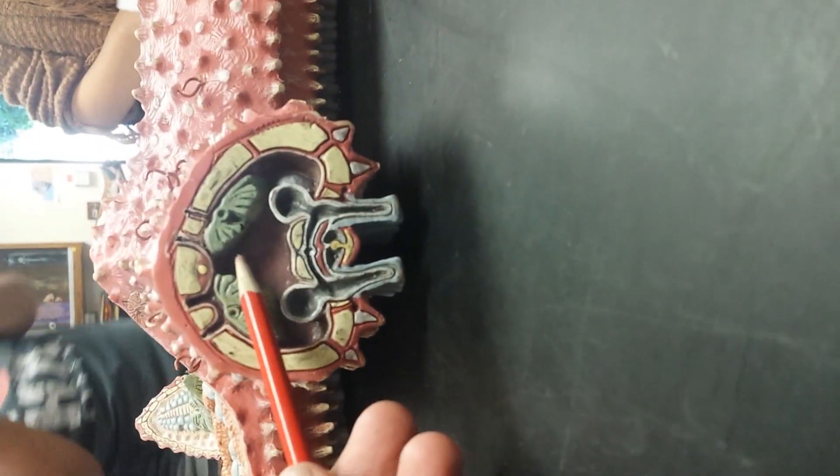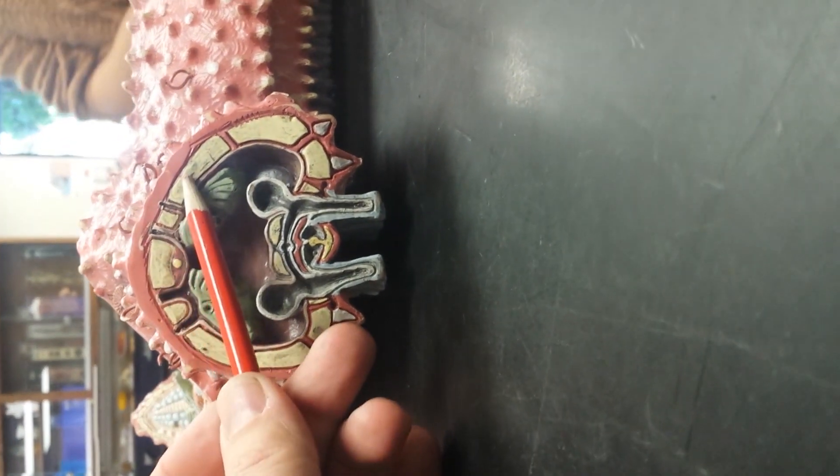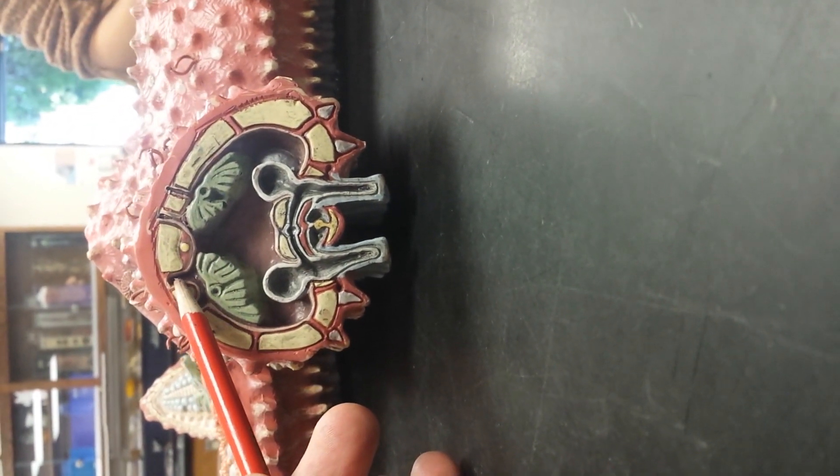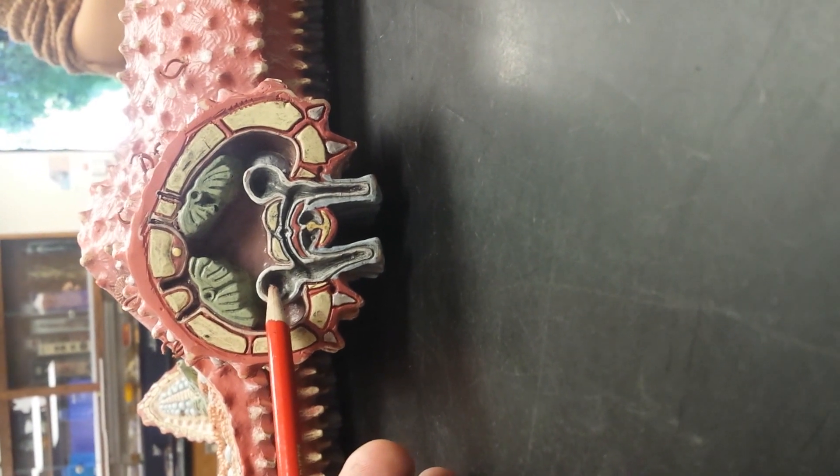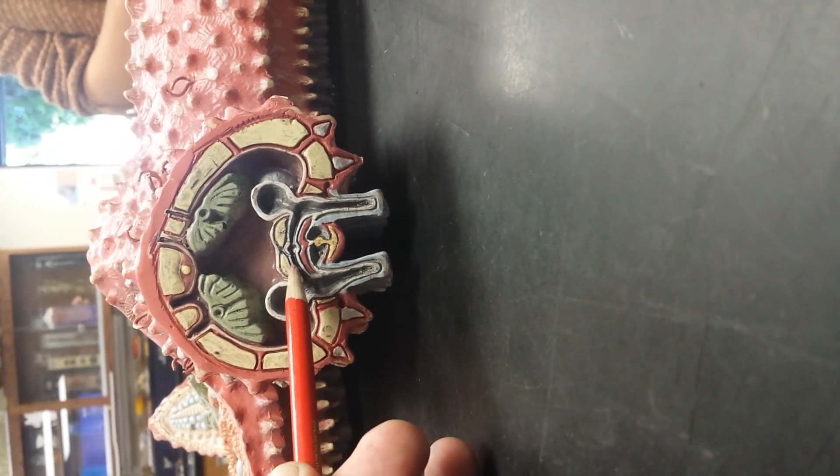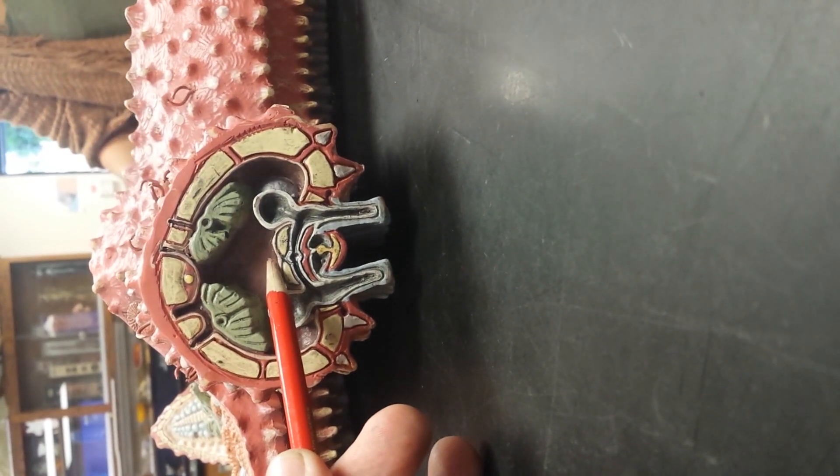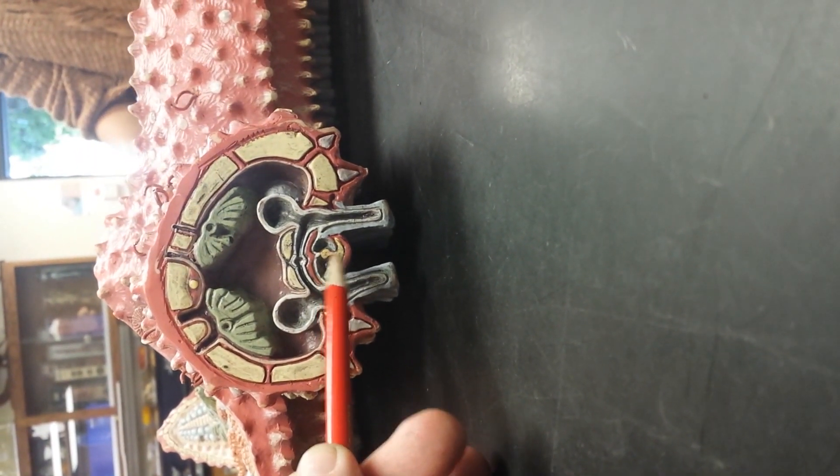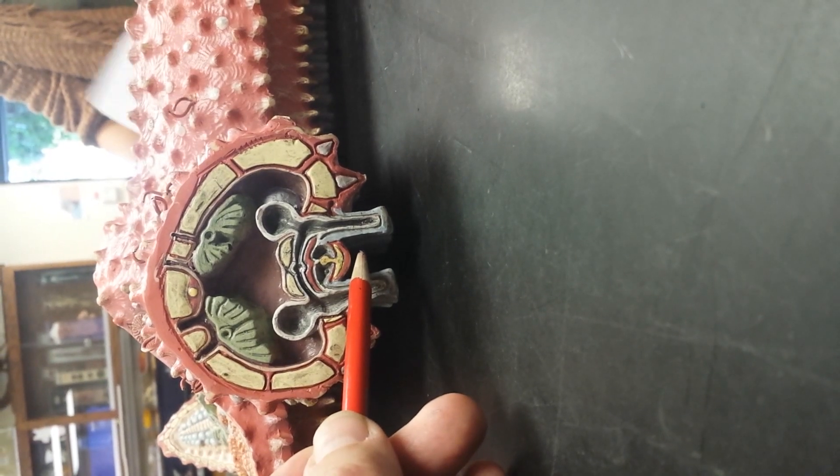Here we go with the coelom, ossicles, dermal branchia, ampulla, tube foot, radial canal, lateral canal, ambulacral ridge, radial nerve, ambulacral groove.